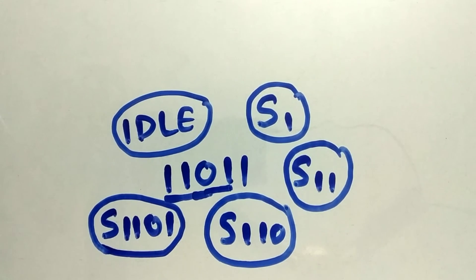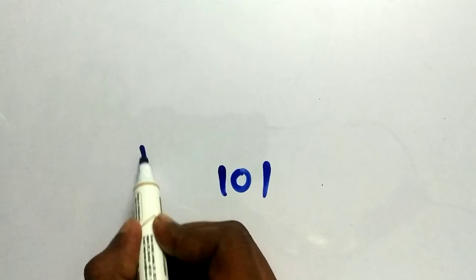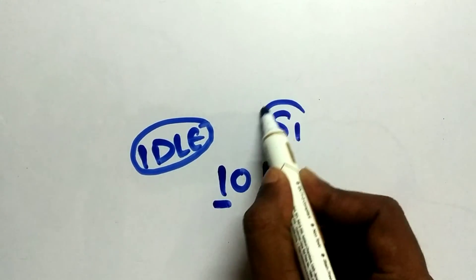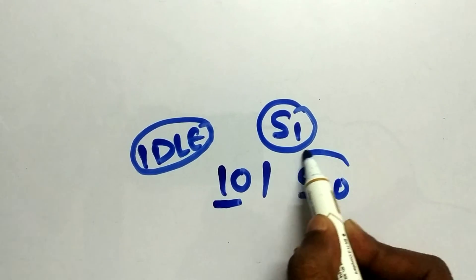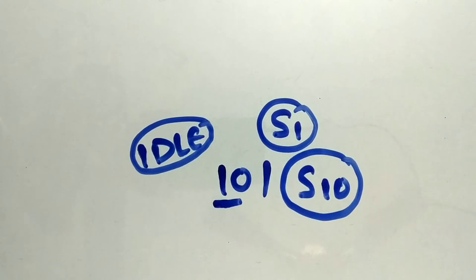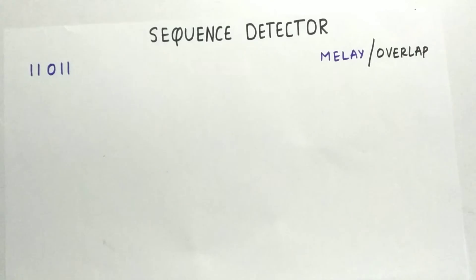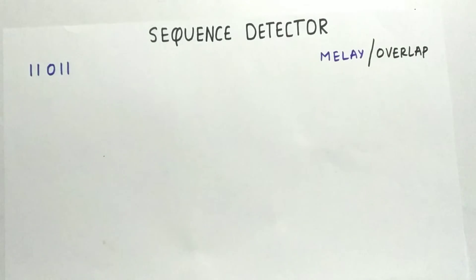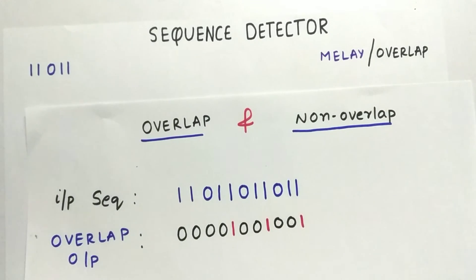For example, for another sequence like 101, the states will be: idle, then the first bit S1, then the second bit S10 — that would be sufficient for detecting 101. Now let us draw the state machine for 11011. The sequence detector will detect 11011 from the input sequence using Mealy and that is overlap. It is an overlap, so our output will look as previously shown.